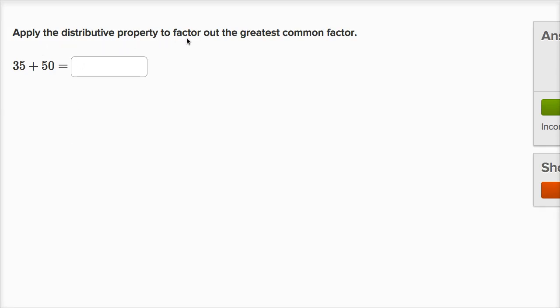We're asked to apply the distributive property to factor out the greatest common factor. We have 35 plus 50 is equal to, so let me get my scratch pad out.